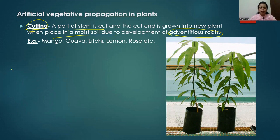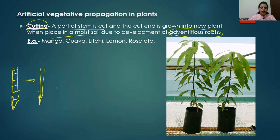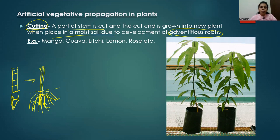While taking the part of the stem, you must carefully check if there are any nodes or internodes present. For example, if you take a small part of the stem where nodes are present, and you place this stem in moist soil, from those nodes new adventitious roots will arise. These adventitious roots will help in anchoring the stem into the soil and will start absorbing water and minerals, and finally this stem will slowly develop into a new plant.